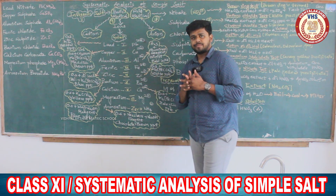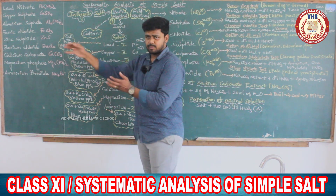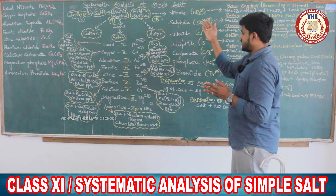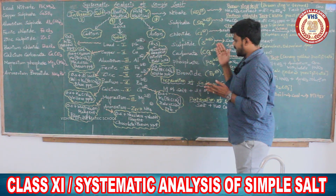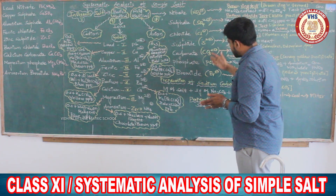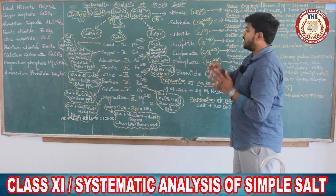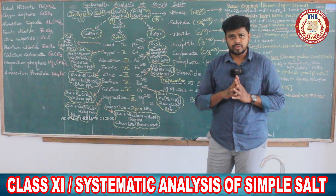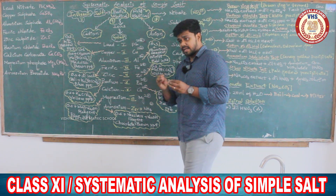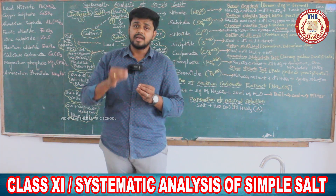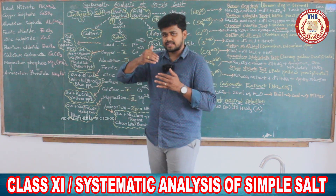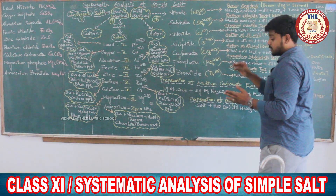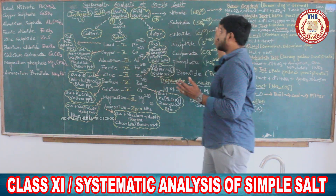The next topic is acid radical. The acid radicals in the 9 salt level are: nitrate, sulfate, chloride, sulfide, carbonate, phosphate, and bromide. For both acid radical and basic radical, you can confirm using a confirmatory test. The confirmatory test is very specific and fully displayed.